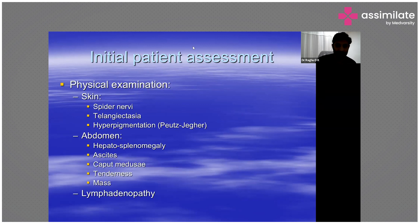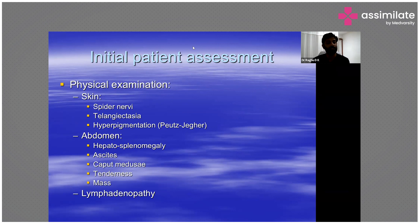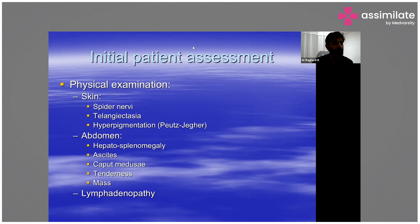More thorough assessment helps identify the possible diagnosis and speeds up the resuscitation process. On physical examination, skin findings are important. Spider nevi over the abdomen indicate a hyperestrogenic state and are common in liver cirrhosis. These are blood spots usually over the abdomen or chest, common in chronic liver disease patients, along with telangiectasias.